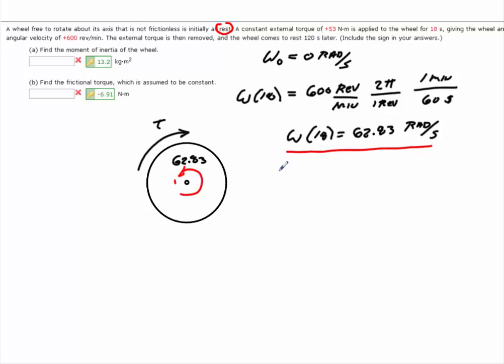So we can use our kinematic equation. And we can say omega at 120 is equal to 0. So we can say omega is equal to 62.83 minus our angular acceleration times our time. And that's 120 seconds.